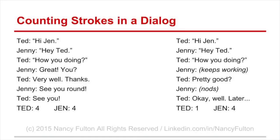Ted walks through the front door: 'Hi Jen.' 'Hey Ted.' 'How are you doing?' Jenny just keeps working. Ted says 'pretty good' but Jenny doesn't say anything or just nods. 'Okay, well, later.' In that interaction, Jen got four strokes because Ted talked to her four times trying to elicit reactions, but he only got one stroke back. In those kinds of unequal stroke economies, one person ends up feeling uneven. This is one of the ways people who are not rational make others feel unsettled — they're not providing the same number of strokes or the same kind of responses, so people start to feel bad without knowing what's wrong.